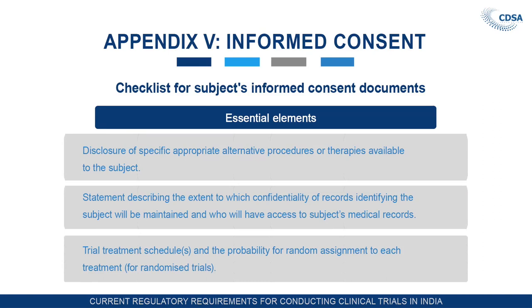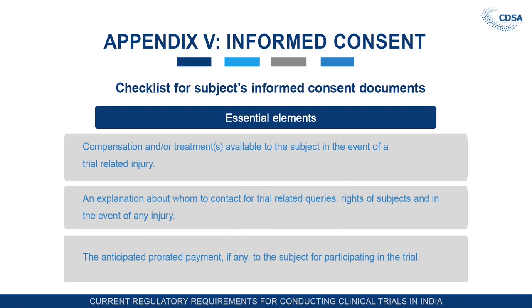Disclosure of specific appropriate alternative procedures or therapies available to the subject — if this therapy fails, what other alternative measures are available must also be disclosed. A statement describing the extent to which confidentiality of records identifying the subjects will be maintained and who will have access to the subject's medical records. Then the trial treatment schedule and probability for random assignment to each treatment if the trial is a randomized trial. Then compensation and treatment available to the subject in the event of trial-related injury — the patient must be made aware that they will receive compensation in case of any injury or death during the clinical trial.